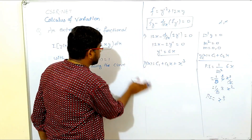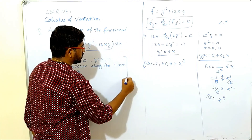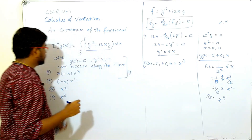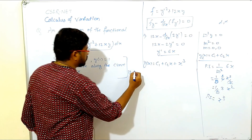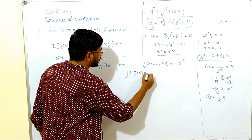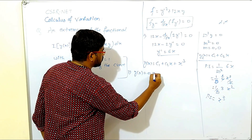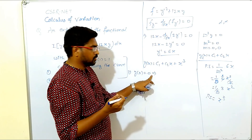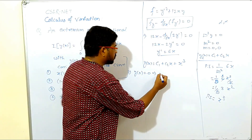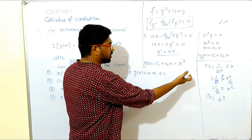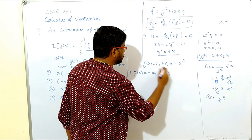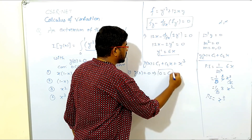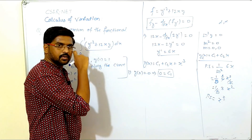The general solution is y(x) = c1 + c2·x + x³. Now applying the boundary conditions: the first condition is y(0) = 0. Substituting x = 0 gives c1 = 0, so c1 equals 0.